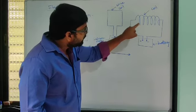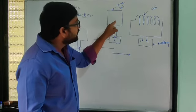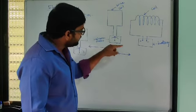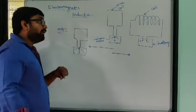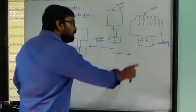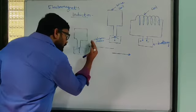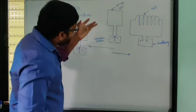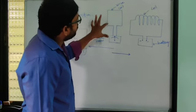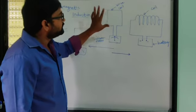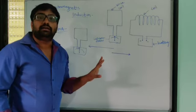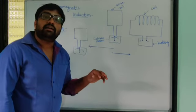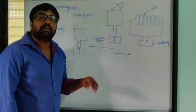Due to the effect of current passing through the first coil, electricity is automatically induced in the second coil even without any direct electrical connection. This concept is called electromagnetic induction. Faraday explained this concept in his law — Faraday's law of electromagnetic induction.